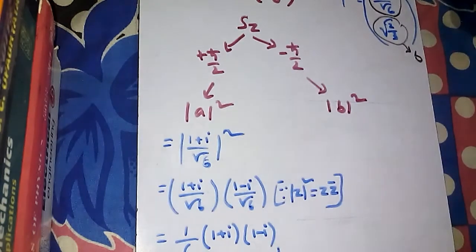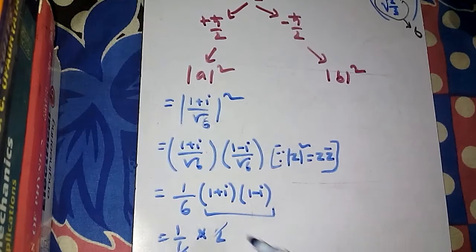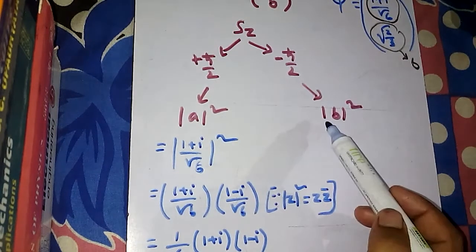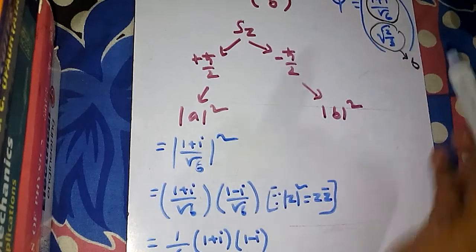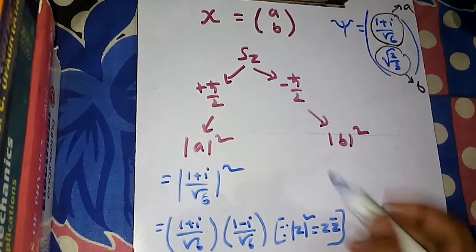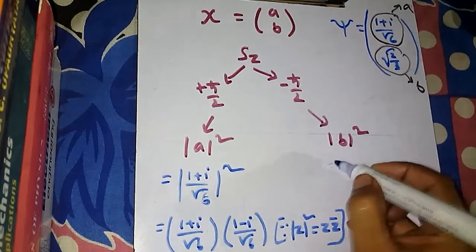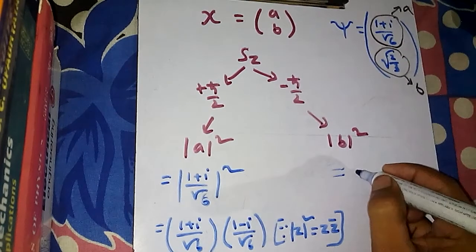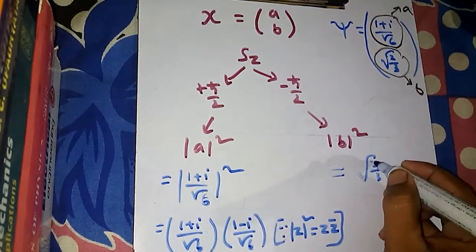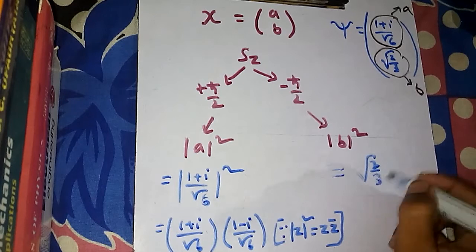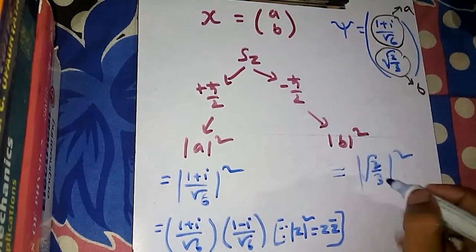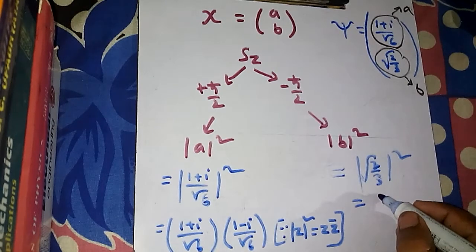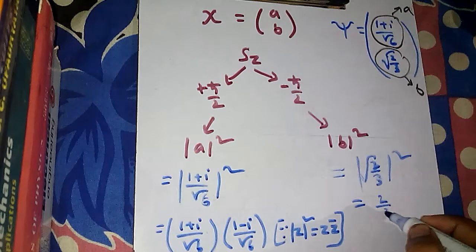So 1/3 is the probability of finding +ℏ/2. Now what is the probability of finding -ℏ/2? That probability is |b|². Here b = √(2/3), so |b|² = |√(2/3)|². Since this is a real number, it is simply 2/3.